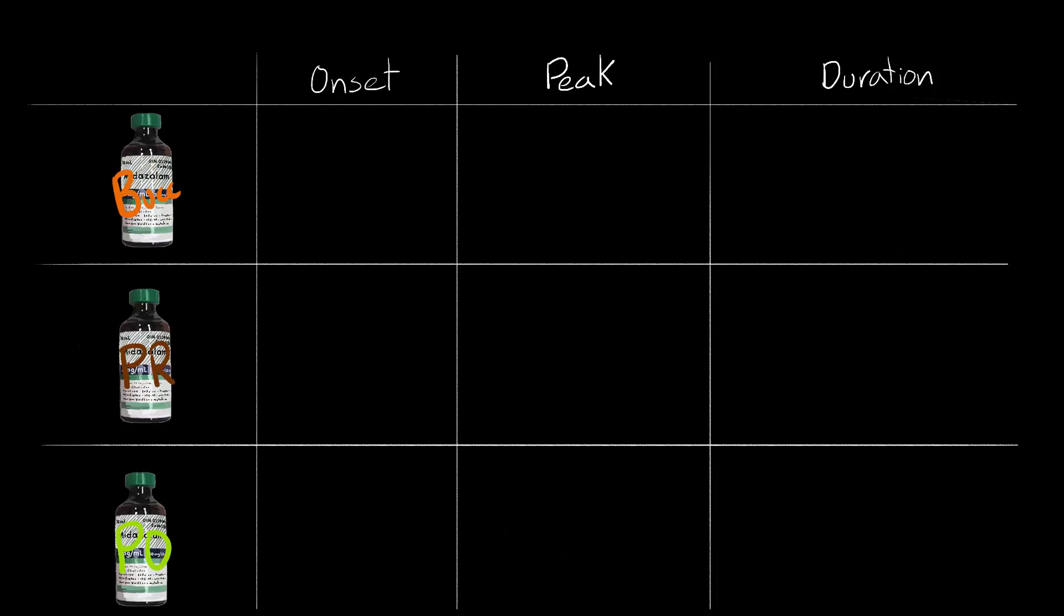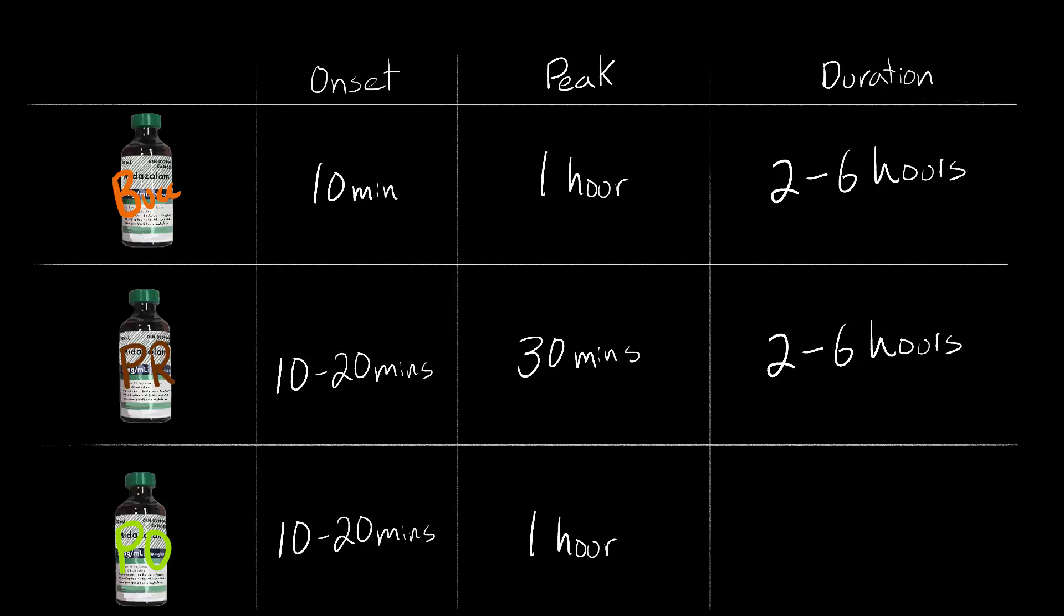Buccal: onset 10 minutes, peaking in 1 hour, and lasting once again 2-6 hours. Rectal: onset 10-20 minutes, peaks in 30 minutes and duration—you might be sensing a trend here—2-6 hours. And finally, PO: onset 10-20 minutes, peaks in an hour, and lasts until the cows come home, as long as they come home in the next 2-6 hours.